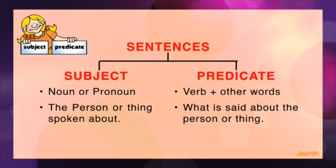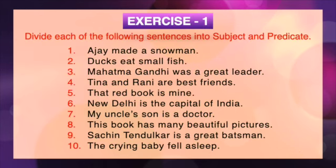In chapter 2, we learn about the two parts of a sentence: the subject and the predicate. The subject always has a noun or a pronoun in it, which tells us the person or thing spoken about in a sentence, while the predicate has a verb and other words telling us what is said about the subject.